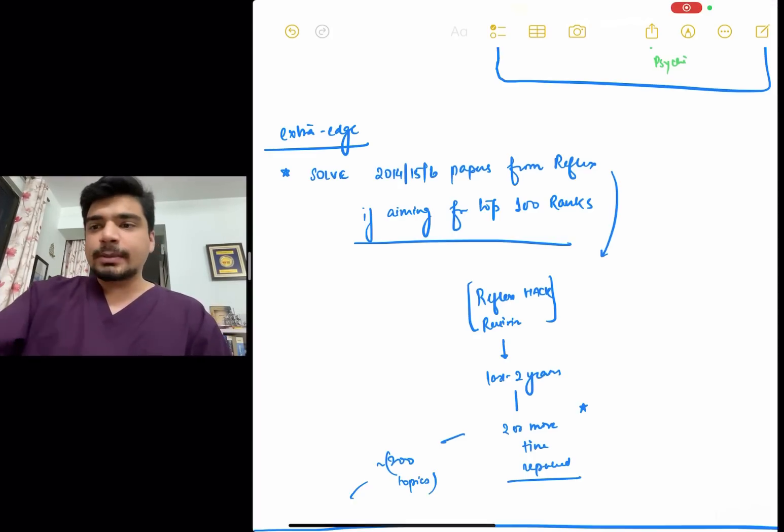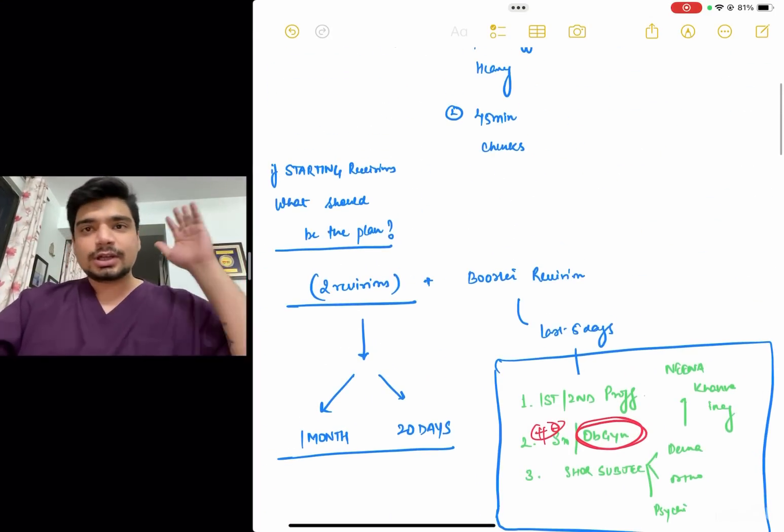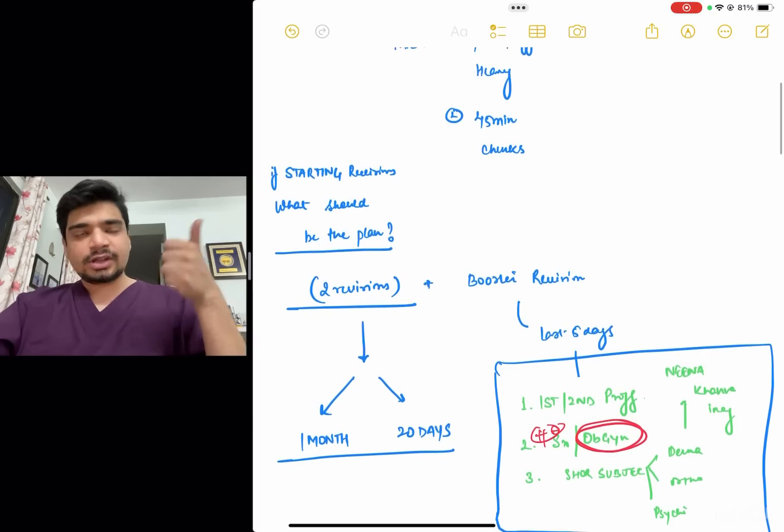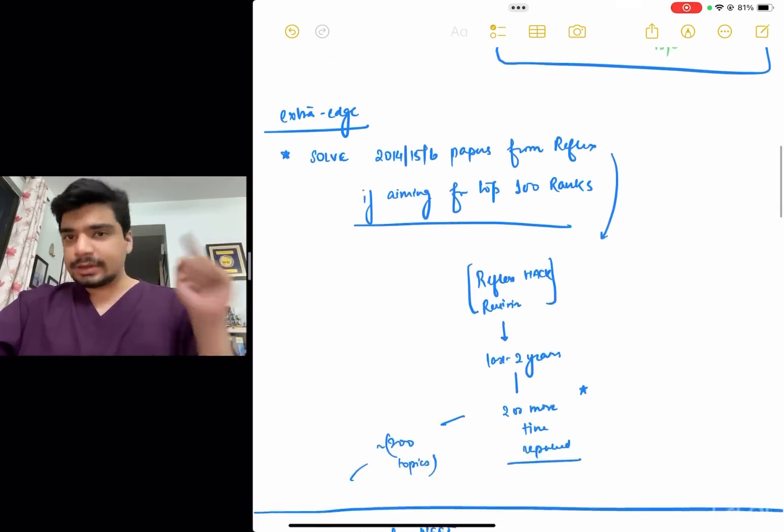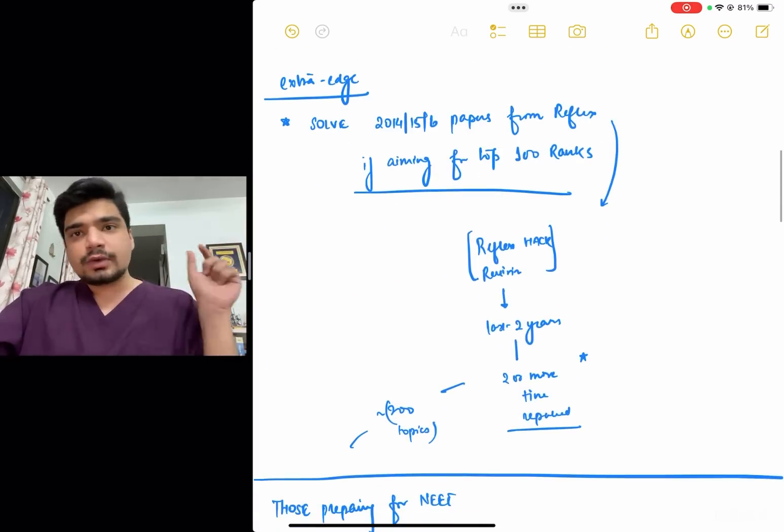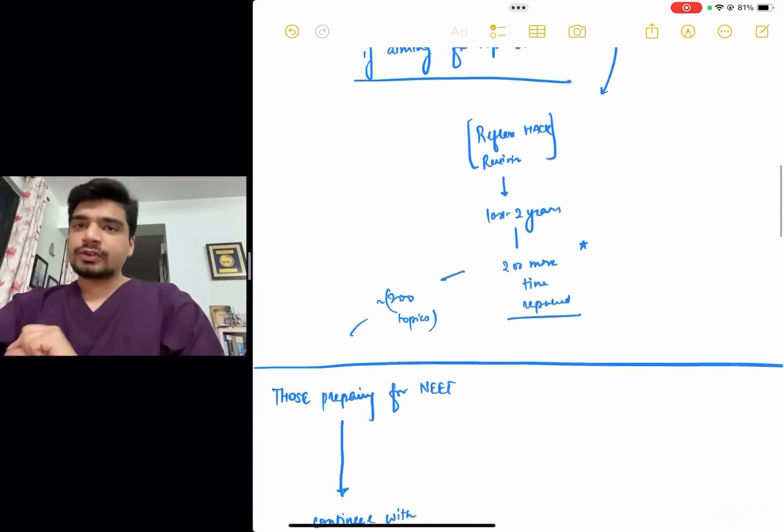But definitely it's going to serve as a booster as far as your revision is concerned. Now back to your topic. So as far as this is concerned, I hope you have understood first and second prof focus, two revisions and a booster revision. Start practicing for 45 minutes, aiming for a top 100 rank, then you can definitely consider going for 14, 15, 16 papers, aiming for or struggling with revision, those revision PDFs can help you.